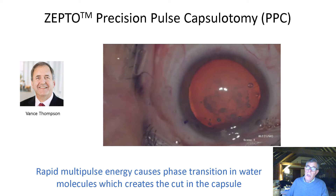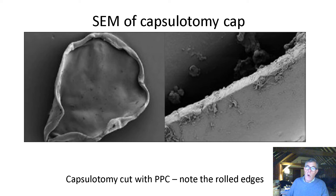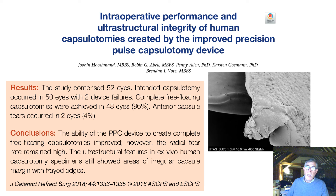You push back the BSS and then remove the capsule. This is one of the first studies which Kevin Walsh and Vance Thompson did with the device, giving them hope that it would be very useful in the future. The SEM of the capsulotomy cap is actually quite similar to what you see with the capsule laser. Vance Thompson describes a streamlined approach for anchoring cataract surgery and intraocular lens centration on the patient's visual axis. However, this device is not completely foolproof — Brendan Vogt and his group found tear-out from what appeared to be perfect capsulotomies using the device.